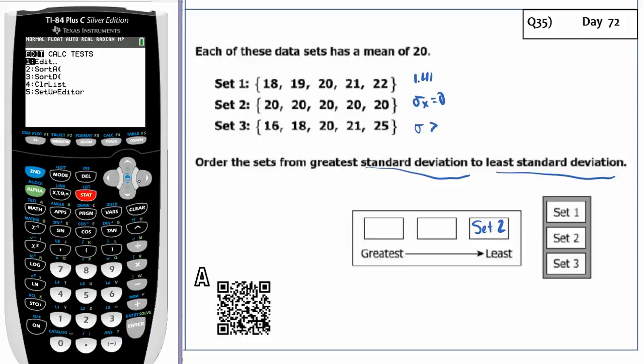And then I'm going to go to stat, edit, and I'm going to put the third set of numbers. And I have those in. So I'm going to go to stat, calc, one variable statistics. And I'm going to see what the standard deviation is here. Standard deviation is 3.03. So the standard deviation equals 3.03.